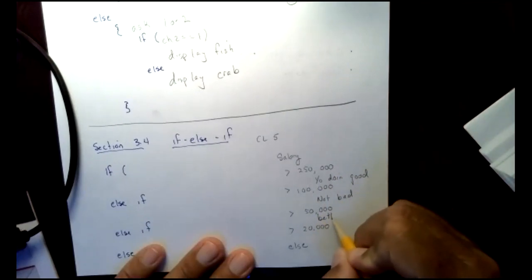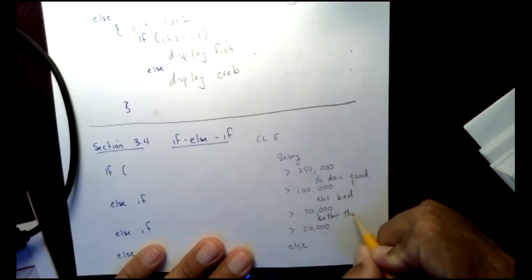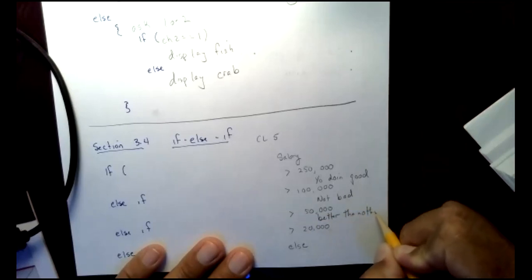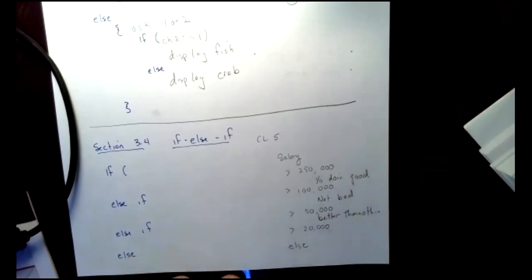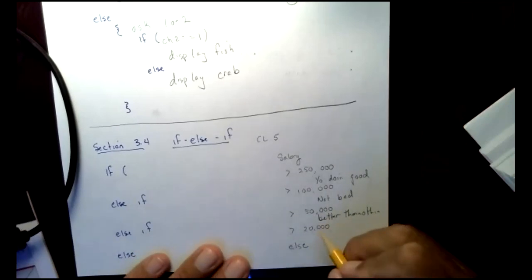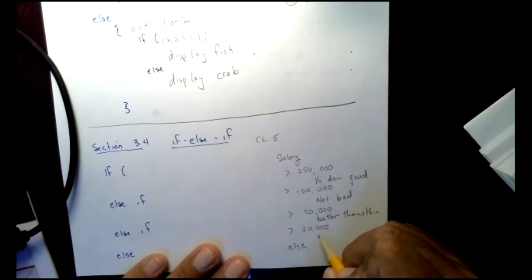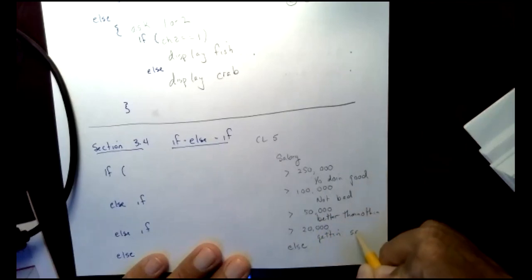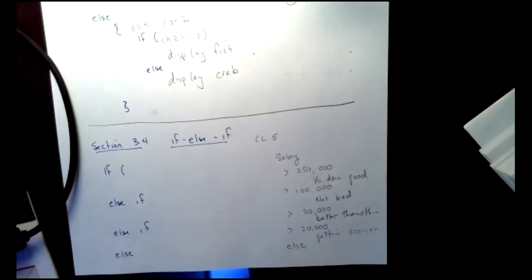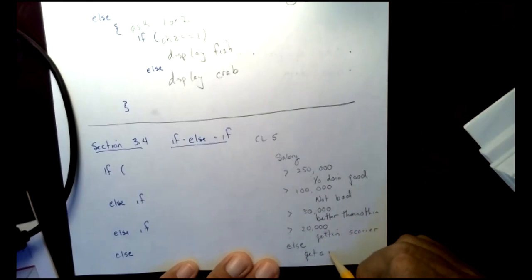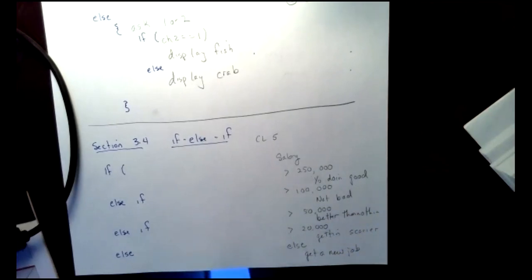What about $20,000? Getting scary. Better than nothing. I thought you're going to say go to college. No. Okay. As it getting scary. Getting scary. Getting scary. Else. What happens with the else? What happens if you make less than $20,000? Get a job. Yeah. Get a new job.